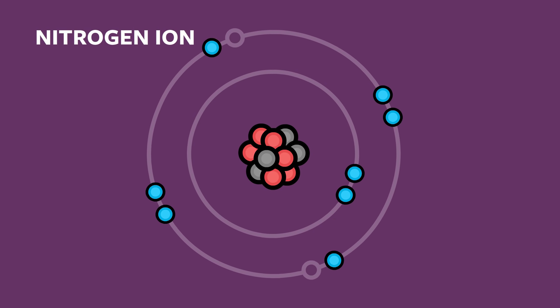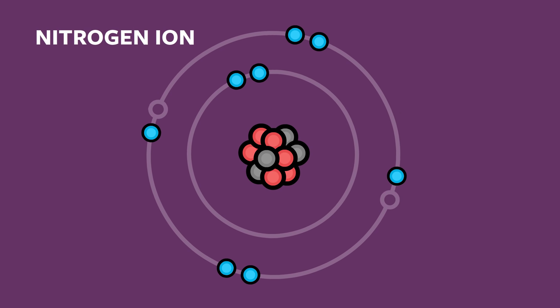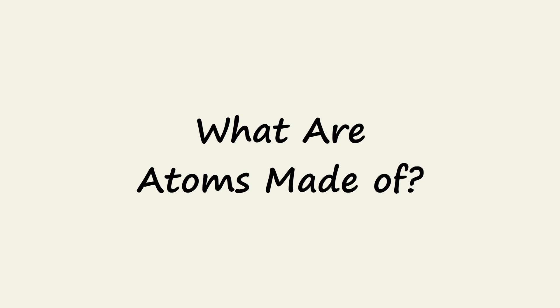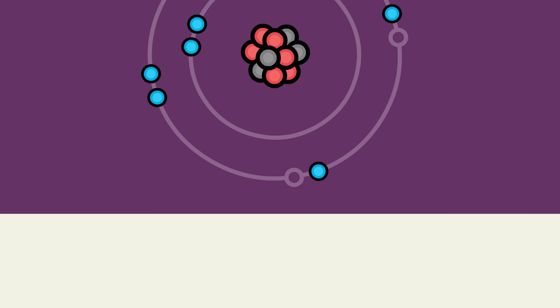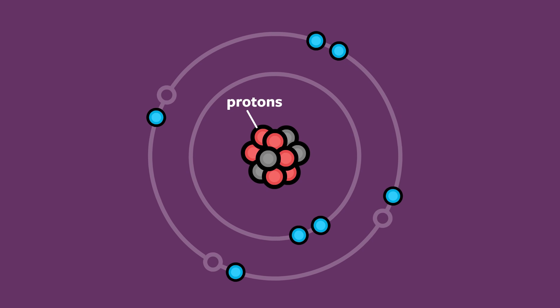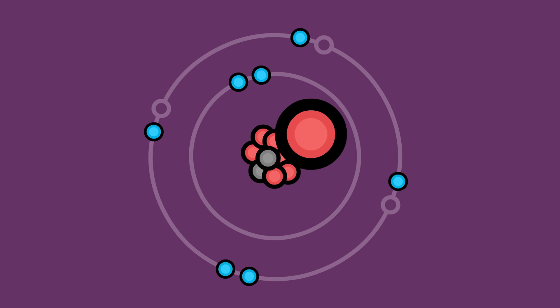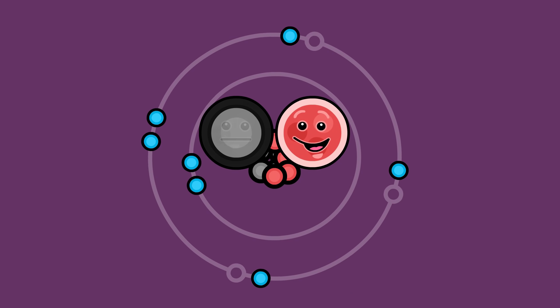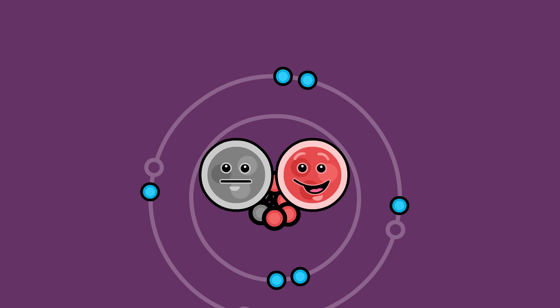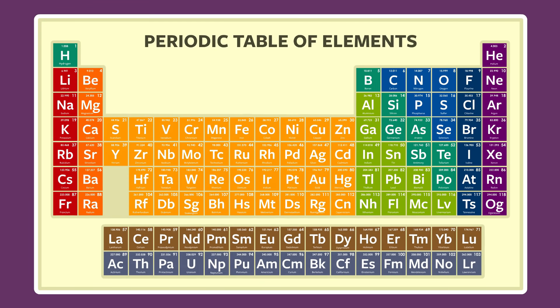That was a lot of information thrown at you in a very short amount of time, so let's recap and summarize the most important bits. What exactly are atoms made of? In the center of an atom, we find one or more protons, and in most cases, we also find neutrons. Protons are positively charged, neutrons are neutral. The number of protons an atom contains determines the type of atom it is.